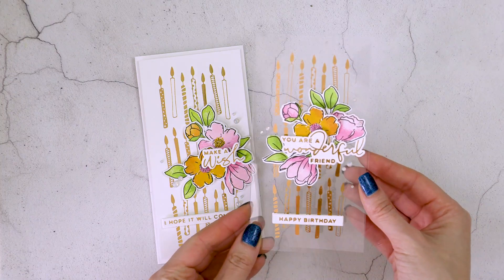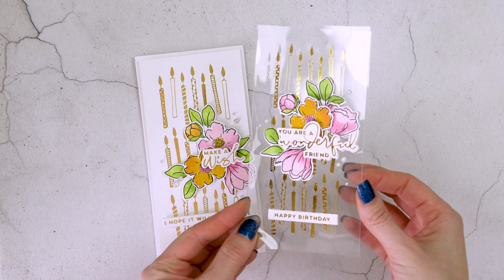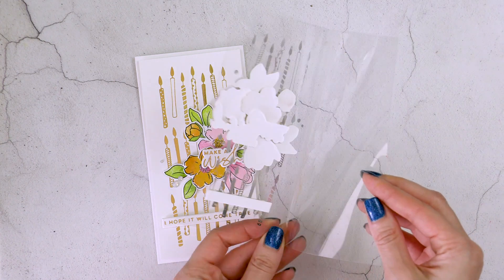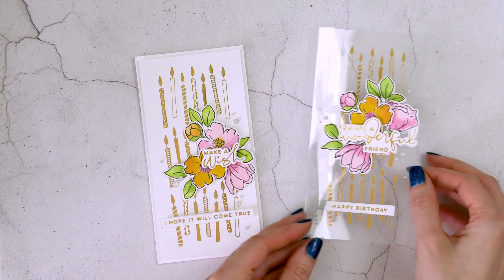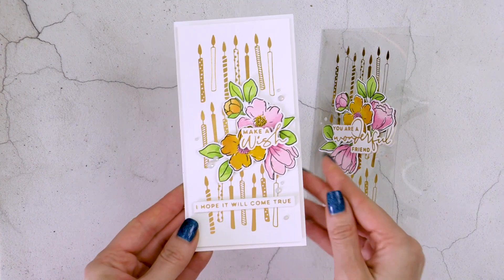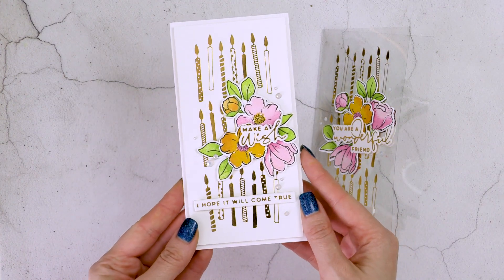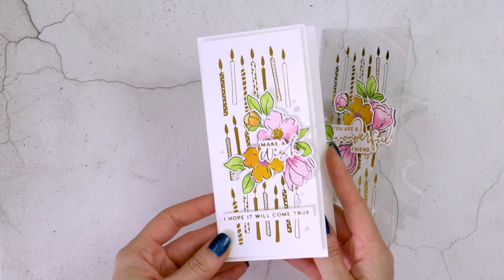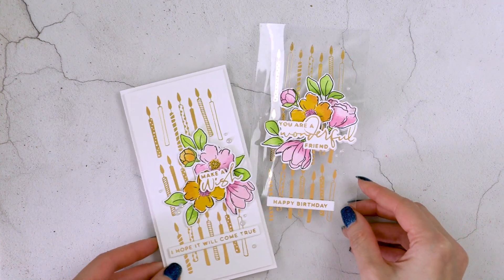Today I have two mini slimline foiled birthday cards to share. One showcases foiling on acetate and another card with an identical design features foiling on a specific type of cardstock to get the best, most smooth and ideal foiled results.